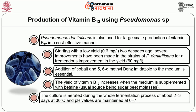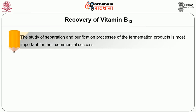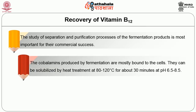The yield of vitamin B12 increases when the medium is supplemented with betaine, normally sourced from sugar beet molasses. The culture is aerated during the whole fermentation process of about 2 to 3 days at 30 degrees centigrade, and the pH values are maintained at 6 to 7. The recovery of vitamin B12 — the study of separation and purification processes of the fermentation products — is most important for commercial success. The corrinoid elements produced by fermentation are mostly bound to the cells. They can be solubilized by heat treatment at 80 to 120 degrees centigrade for about 30 minutes at pH 6.5 to 8.5.